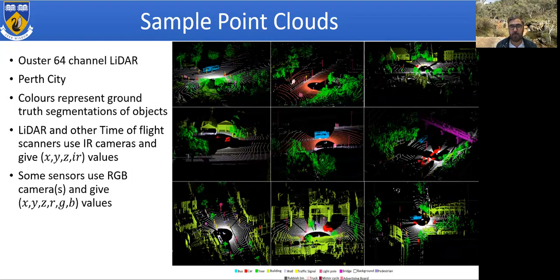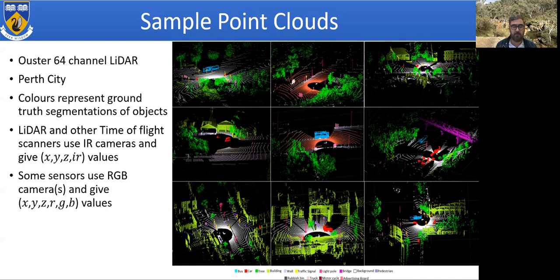Here are some sample point clouds captured by a 64-channel LiDAR. These point clouds are of Perth city. The colors here do not represent the colors of the objects, but are assigned based on segmentation — a different color to buildings, a different color to a bus, different colors to vegetation, and so on. Some LiDARs will also give you the reflected IR light, and some RGB scanners will give you the RGB values of the points as well.